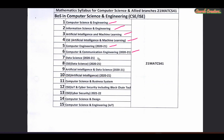The seventh branch is Data Science. The eighth branch is Computer Science and Data Science. The ninth branch is Artificial Intelligence and Data Science. The tenth branch is Computer Science.